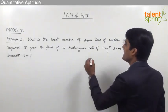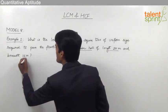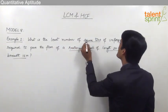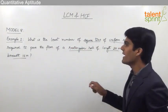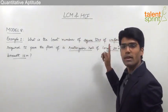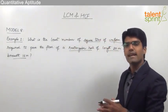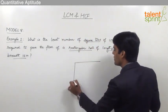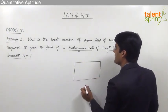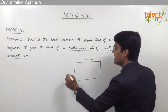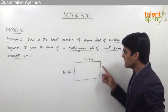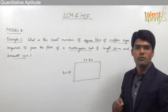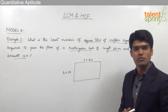As given in the question, there is a rectangular hall of length 20 meters and breadth 16 meters, and the flooring of this hall has to be done with the help of square tiles of uniform size. We need to decide what will be the least number of square tiles required to do the flooring of such a hall. Let us assume the length is 20 and the breadth is 16 — this is the rectangular floor, and all tiles have to be of equal size.